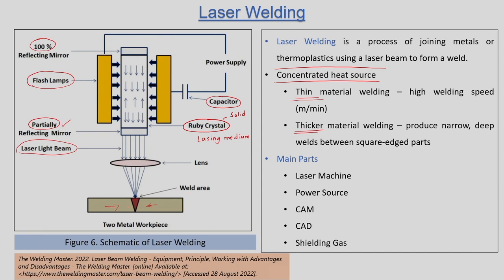These are the two work parts placed very near to each other with certain geometry at their ends. When we apply the laser beam energy over the interface of these two work parts — part 1 and part 2 — this portion gets melted and then re-solidified. By having a concentrated heat source generated by the laser beam, we can join these two parts together. For this purpose we require a laser machine and a power source.